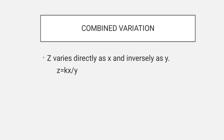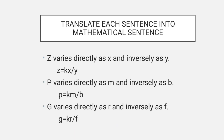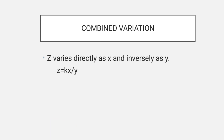Combined variation — the last type. Z varies directly as X and inversely as Y. The formula is Z equals K times X over Y. For combined variation, we multiply and divide.